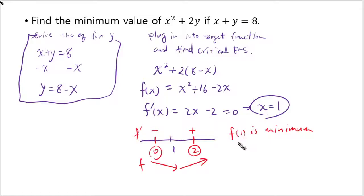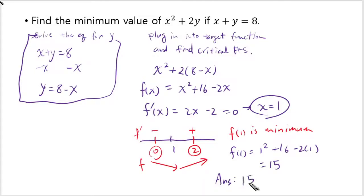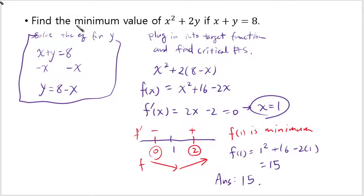From the first derivative test, f of 1 is the minimum. To calculate f of 1: plug in 1 to get 1 squared plus 16 minus 2 times 1, which is 16 minus 2 plus 1, that's 15. So the answer is 15. Be careful when writing the answer — sometimes they ask for the x and y values that minimize the expression, in which case you'd also need to find y by plugging x equals 1 back into the constraint. But here, since they only ask for the minimum value of x squared plus 2y, the answer is 15.